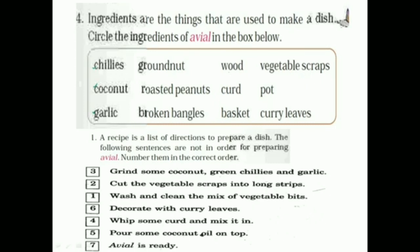So the answers: chilies, we know chilies. Groundnut is there, no, groundnut is not there. Wood, no. Vegetable scraps, yes, vegetable scraps is there. Then coconut, coconut is there, yes, ground coconut. Then roasted peanuts, no. Curd, yes, curd is there. Then pot, pot is not an ingredient. We want pot but it is not the ingredients. Then garlic, then curry leaves. At last he decorated with curry leaves. So the answers you have to circle. The answer should write in your textbook.